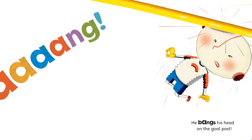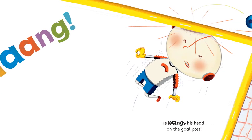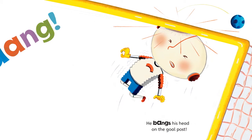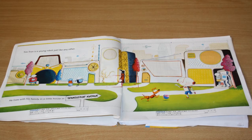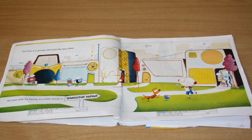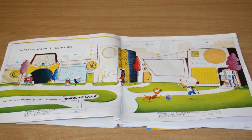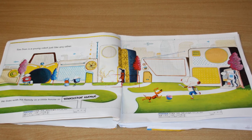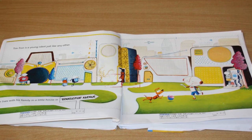Next we had to send the book to print, and before long we had something called a plotter's proof back from the printer. This was our very last chance to make any changes or to spot any mistakes.